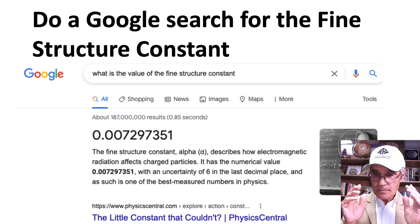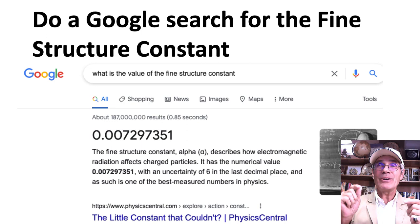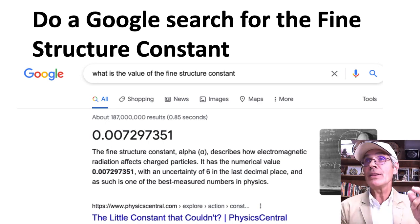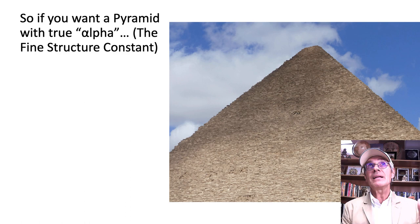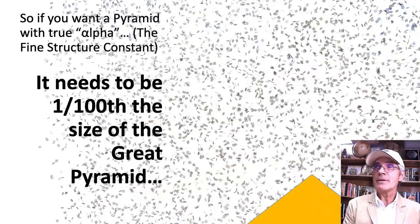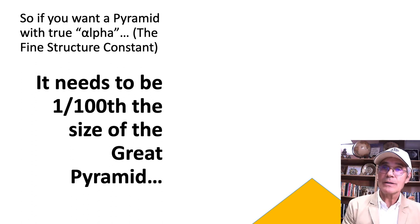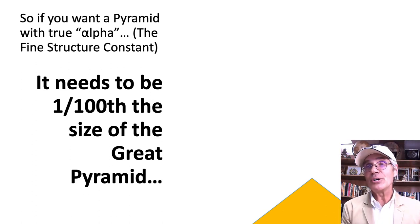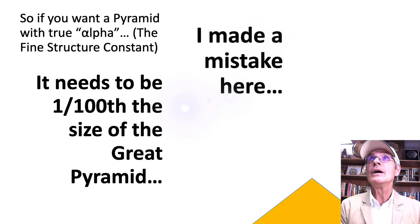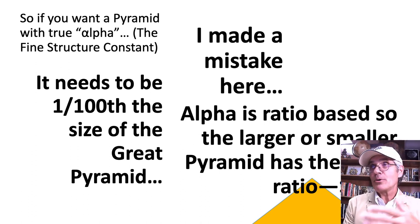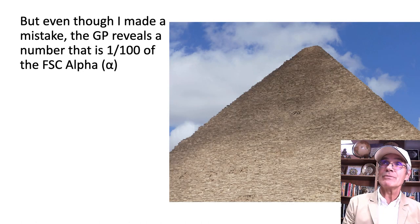Let's be honest: if I owe you 50 cents and I pay you 5 cents, are we even? Or if I owe you $5,000 and I pay you 50, are we even? So in a sense, obviously that doesn't show the fine structure constant. I suggested in my last video that if you want a pyramid with a true alpha, it needs to be 1/100th the size of the Great Pyramid. But as someone pointed out on YouTube, it would still be the same ratio — a 1/100th-size pyramid would still have the same ratio. Alpha is ratio-based; the larger or smaller pyramid has the same 0.729, not 0.00729. You don't solve it that way.